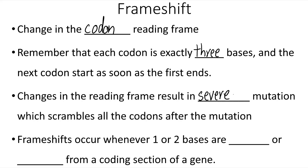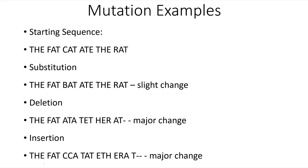Frameshifts occur when one or two bases are added or lost from a coding section of a gene. To show an example of what a frameshift mutation is like and its impact, we're going to use the English language but assume that there's a rule that every single word has to be exactly three letters long. So we have our initial starting sentence: 'the fat cat ate the rat.'